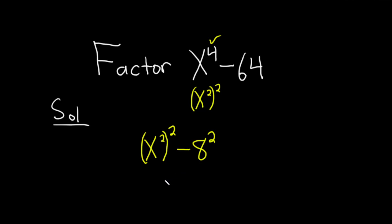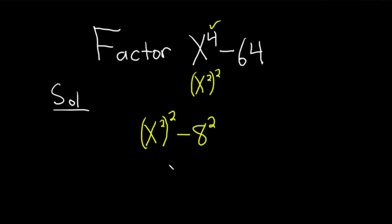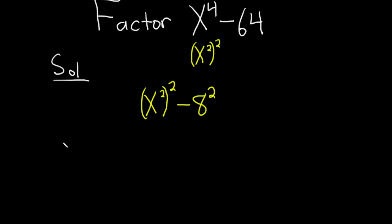And so now we have the difference of squares formula. Recall that formula says if you have a squared minus b squared, that's equal to a minus b times a plus b.